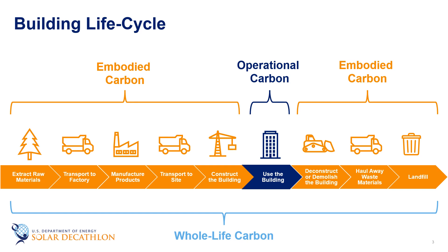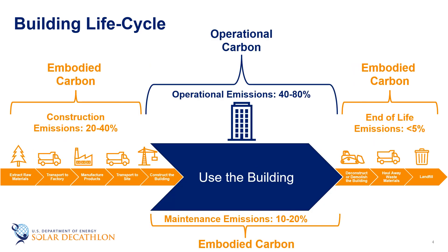In recent years, researchers have started to focus more and more on ways to decarbonize the manufacturing and construction processes associated with buildings. As we learned earlier, operational carbon usually represents a majority of the total life cycle carbon of a building. Operational carbon includes direct emissions, or the carbon emitted through the direct consumption of fossil fuels in buildings, as well as indirect emissions, which are carbon emissions related to the generation of electricity for use in buildings.